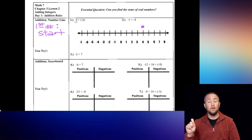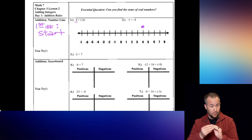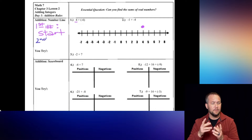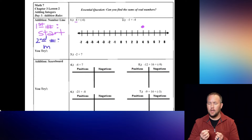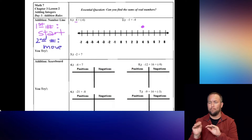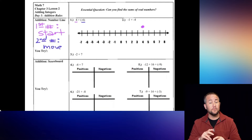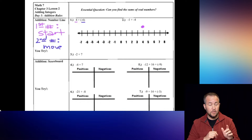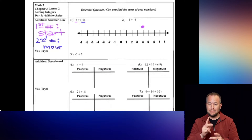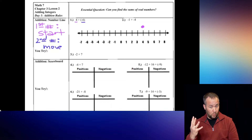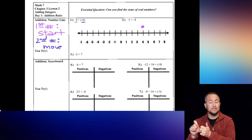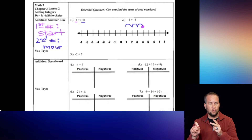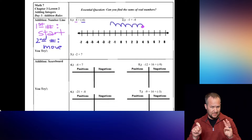The next number that you have is how many spaces you are going to move. So the second number is going to be our move — we're moving that many spaces. The negative 6 is telling us we're going to go left and move 6 spaces. So starting at 4, I go 1, 2, 3, 4, 5, and 6 spaces to the left.